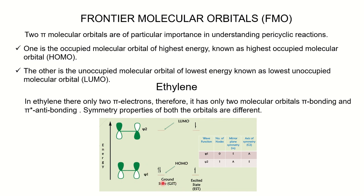Ground state — all thermal reactions occur in the ground state. Excited state — all photochemical reactions occur in the excited state. This is a very important point: thermal reactions use ground state, photochemical reactions use excited state.